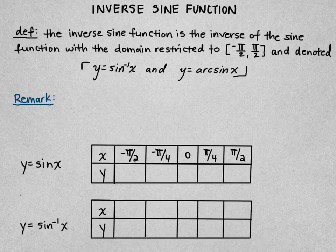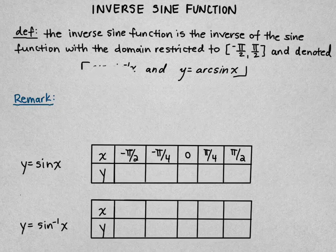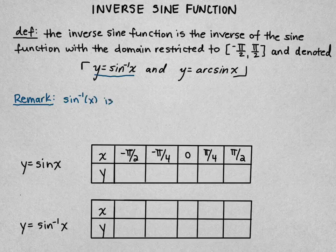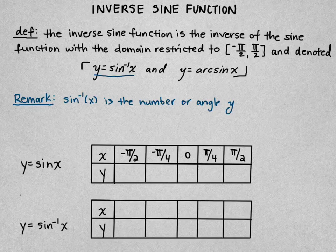The inverse sine function is the inverse of the sine function when the domain is restricted to negative π/2 to π/2. We denote this as y = sin⁻¹(x) — this is what you'll see on your calculator — and we also use arcsin(x); there won't be an arcsin button on your calculator, but they mean the same thing. When finding sin⁻¹(x), we're looking for the number or angle y inside the interval negative π/2 to π/2 whose sine is x.